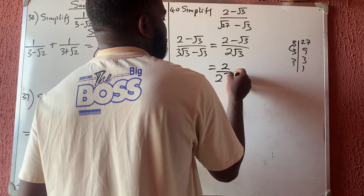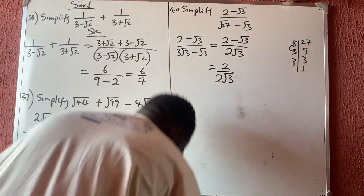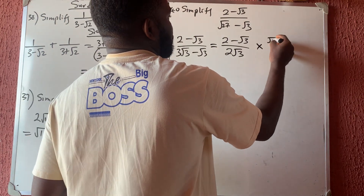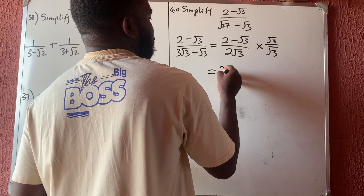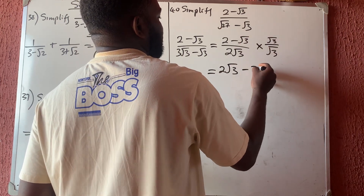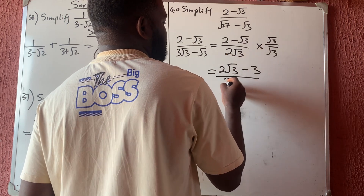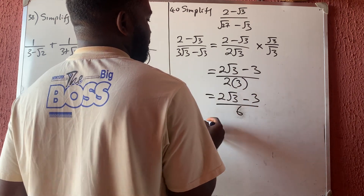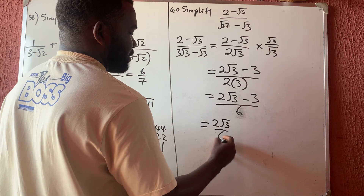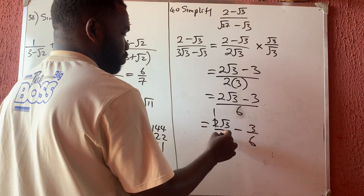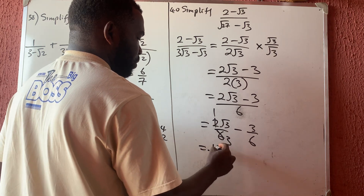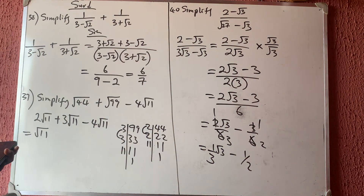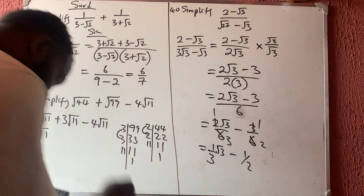So we have (2 minus √3) over 2√3. We must rationalize because we don't leave surds in the denominator. Multiplying by √3 over √3 gives: numerator becomes 2√3 minus ordinary 3, denominator becomes 2 times √3 times √3 which is 2 times 3 equals 6. Splitting: 2√3 over 6 minus 3 over 6 simplifies to √3/3 minus 1/2, which can also be written as (1 over 3)√3 minus 1 over 2.